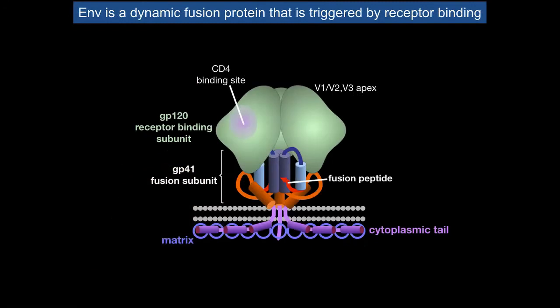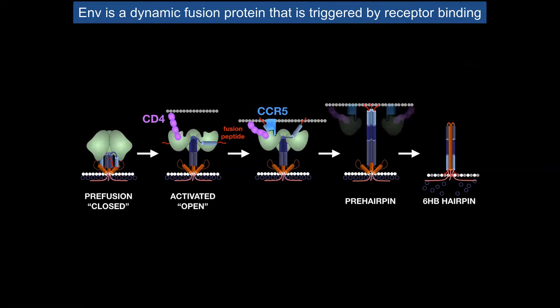The reason envelope has these dynamic properties is that its main function — membrane fusion — requires conformational changes from the pre-fusion state to intermediate states, pulling two membranes together. In response to CD4 binding, it undergoes dramatic structural changes that make possible co-receptor binding, binding to a site that hadn't existed before CD4 binds. Co-receptor interaction is believed to be the true trigger for membrane fusion, allowing the GP41 subunit to grab hold of the target membrane and refold to pinch the two membranes together.